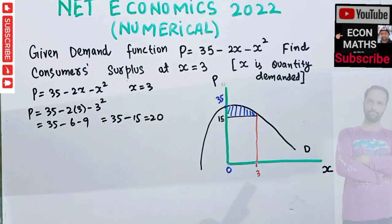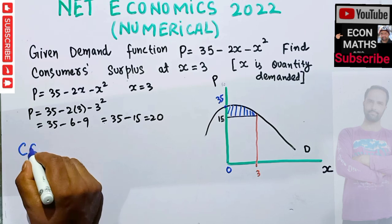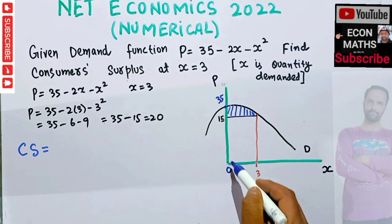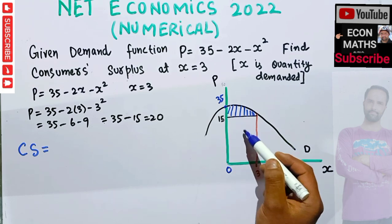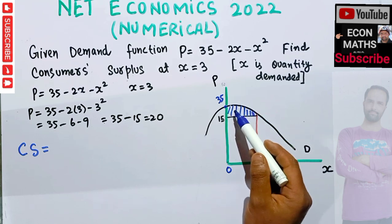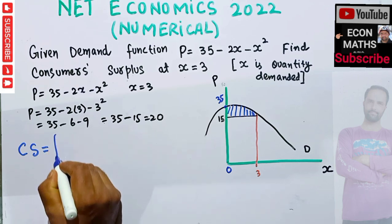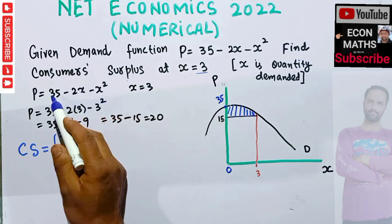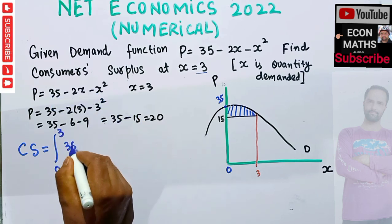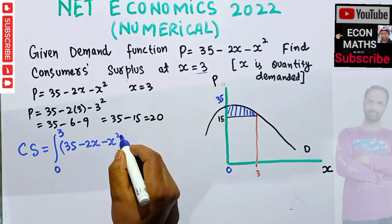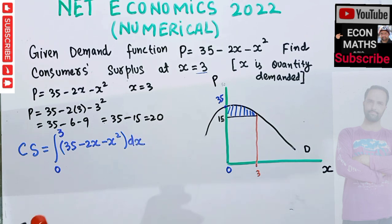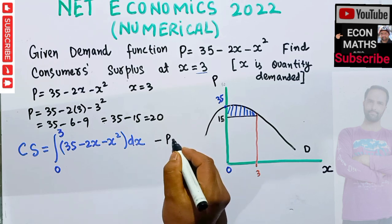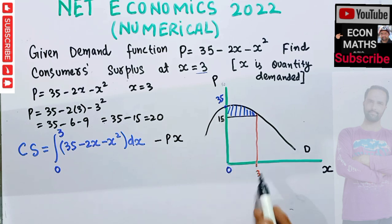To calculate consumer surplus with a nonlinear graph, we use the definite integral. Consumer surplus equals the definite integral from 0 to the equilibrium quantity of the demand function, minus the total expenditure. We take the integral of 35 minus 2x minus x squared dx, then subtract the total expenditure, which is price multiplied by quantity.